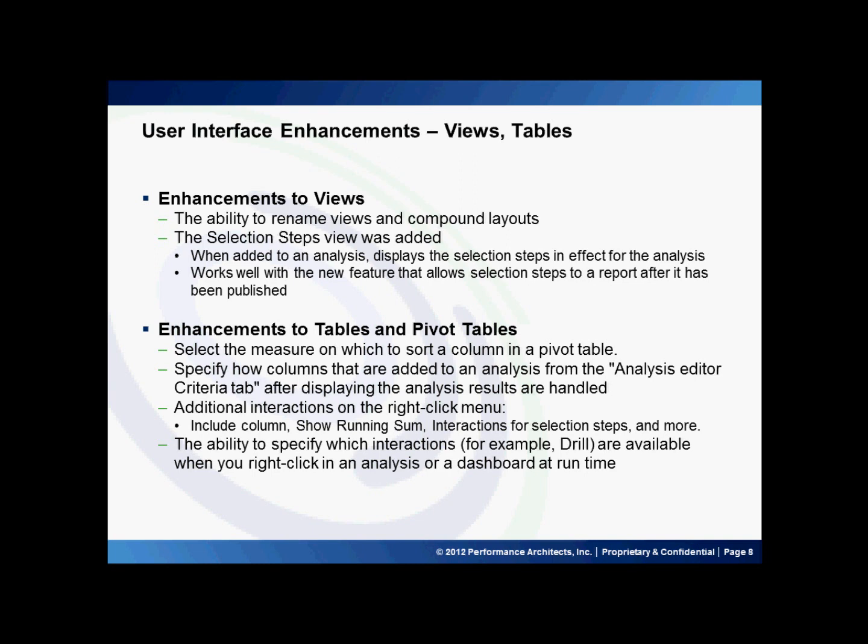There have been additional enhancements to tables and pivot tables that allow you to select the measure on which to sort a column in a pivot table, and to specify how columns added to an analysis from the analysis editor criteria tab after displaying results are handled. Additional interactions on the right-click menu include column, show running sum, interactions for selected steps, and more. You can also specify which interactions — for example, drill — are available when you right-click an analysis or dashboard at runtime.